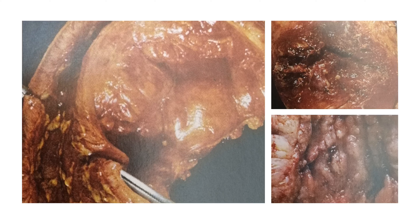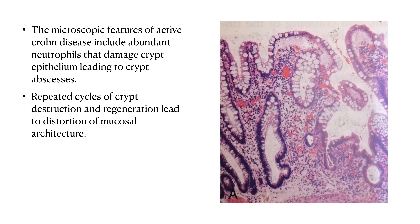The intestinal wall is thickened and rubbery as a consequence of transmural edema, inflammation, submucosal fibrosis, and hypertrophy of the muscularis propria, all contributing to stricture formation. As seen in the figure, stricture formation is grossly visible. Fissures frequently develop between mucosal folds and may extend deeply to become fistula tracts or sites of perforation. The cobblestone appearance shows normal mucosa raised and diseased mucosa depressed.